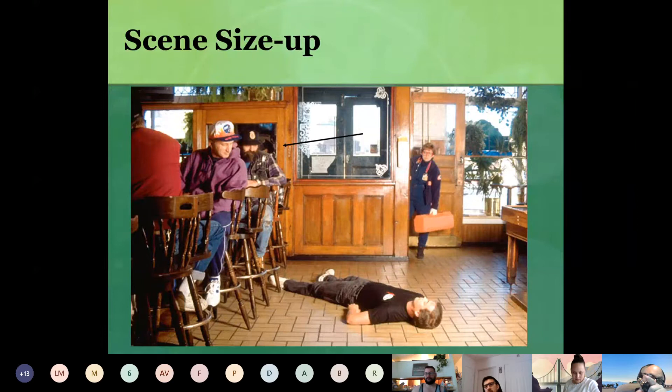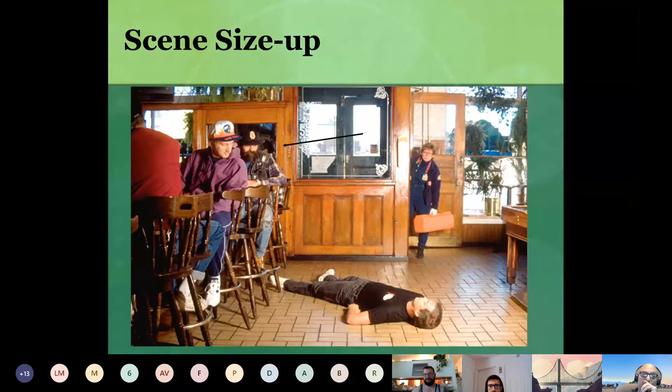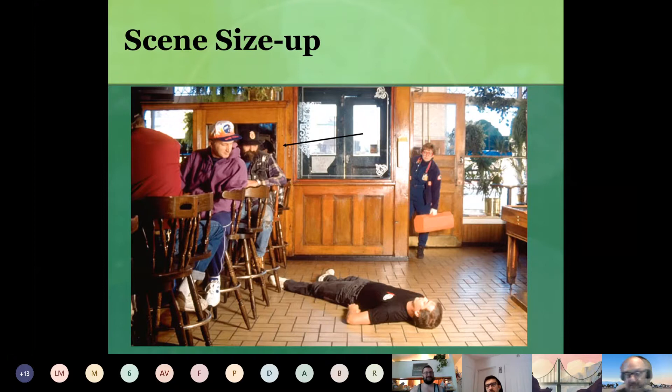Your safety — we all have somebody to go home to. You might not have a significant other, but maybe you have parents. The order of importance is: you, your partner, the patient, and then the bystanders. That's the level of importance: you, your partner, the patient, and finally bystanders.